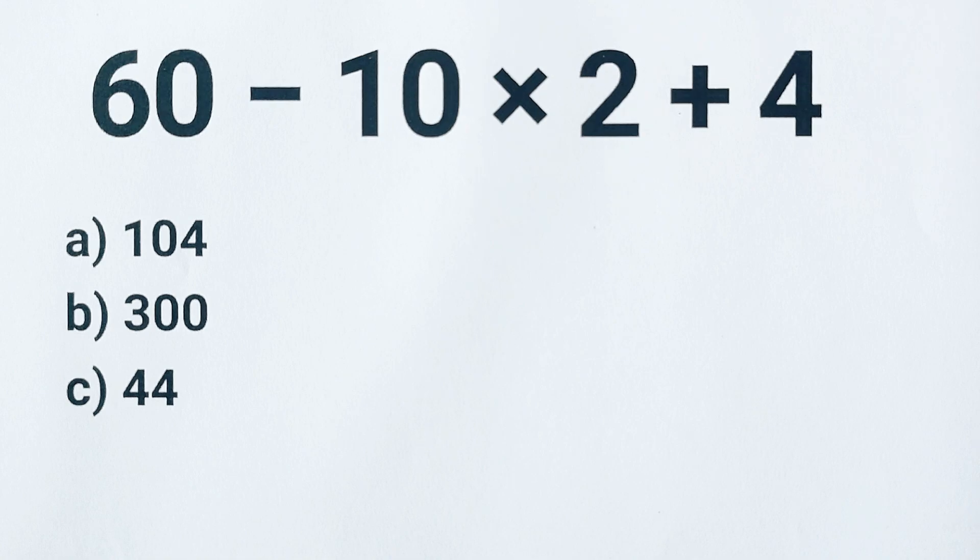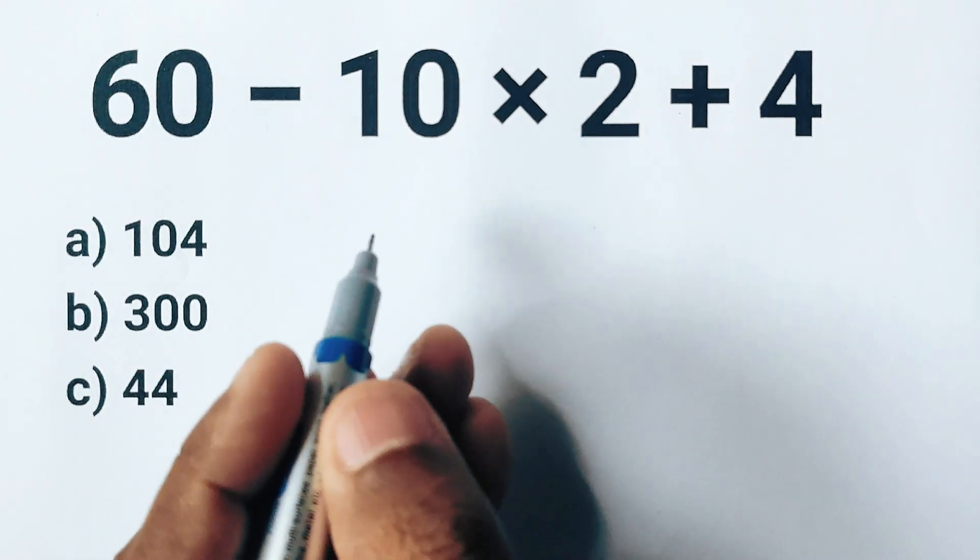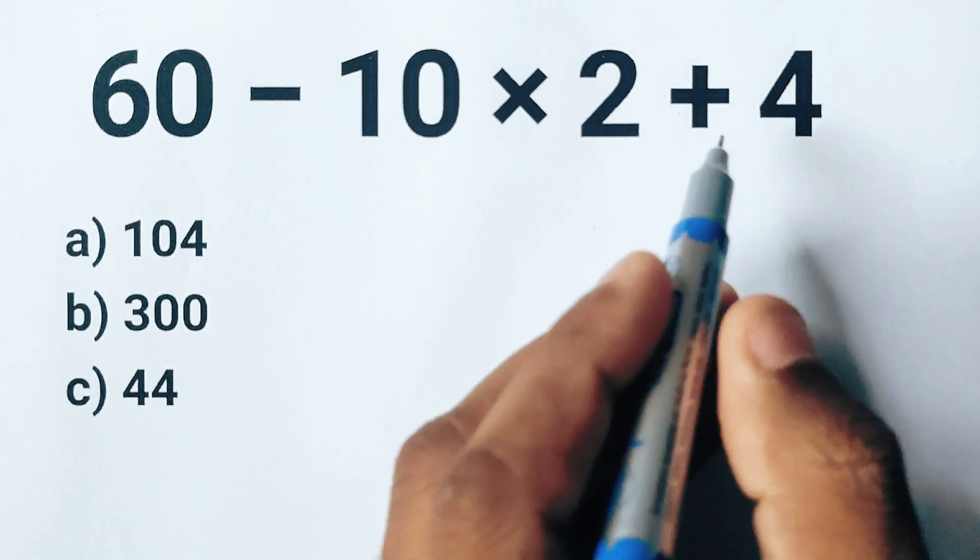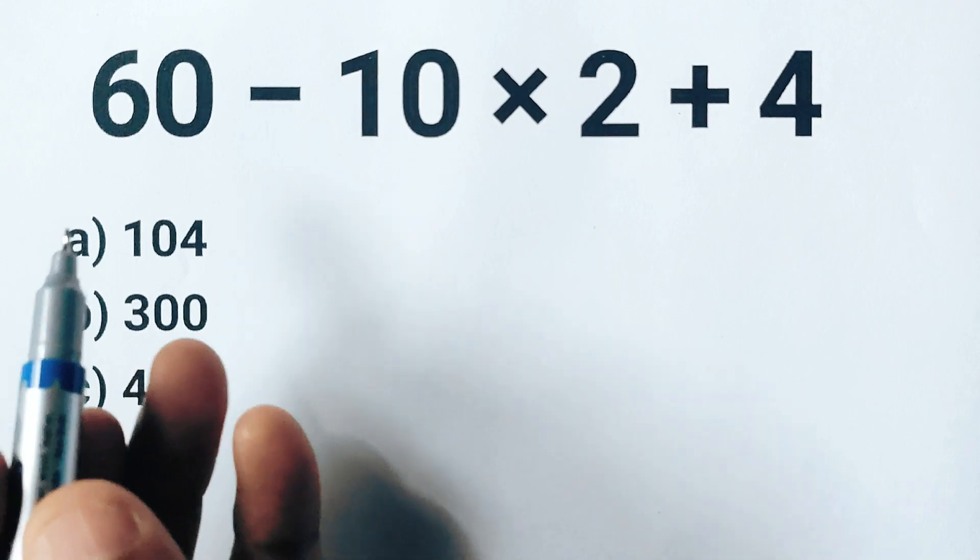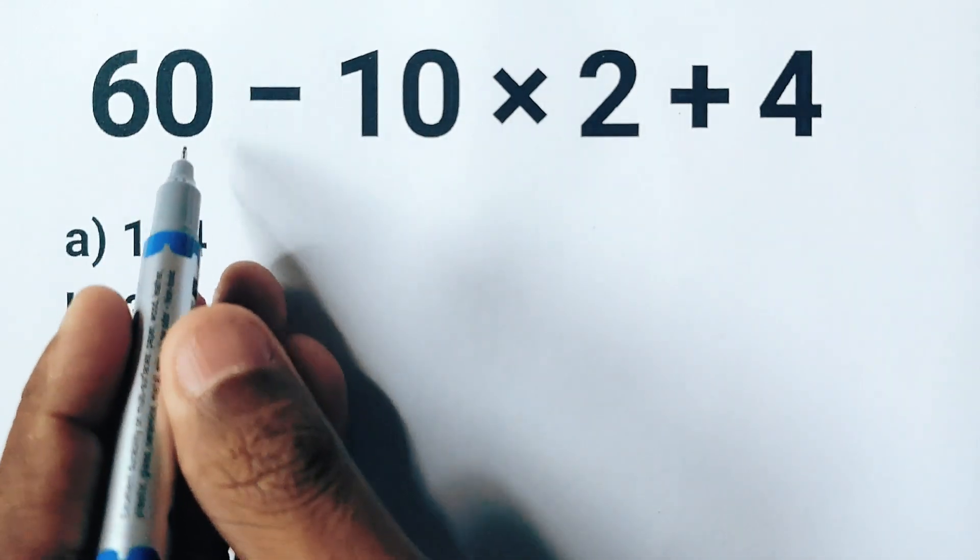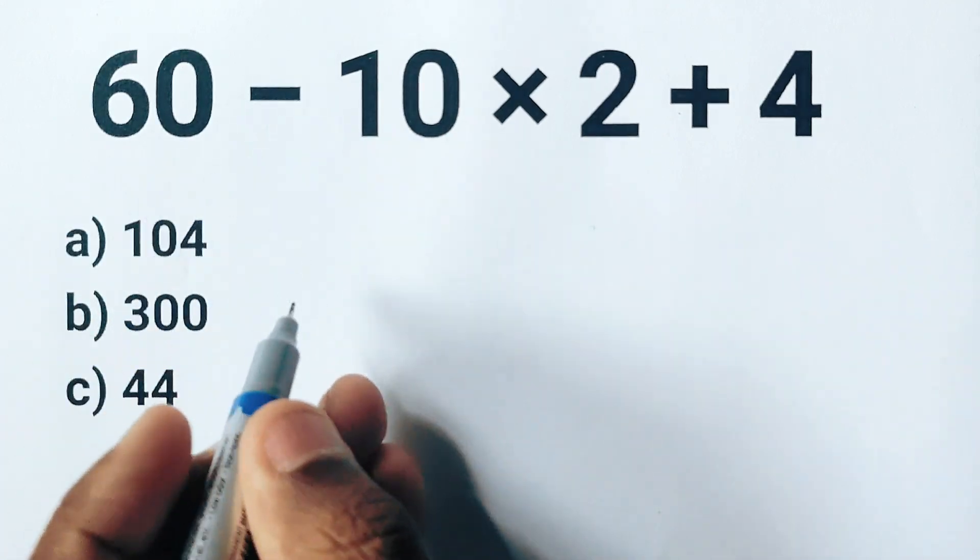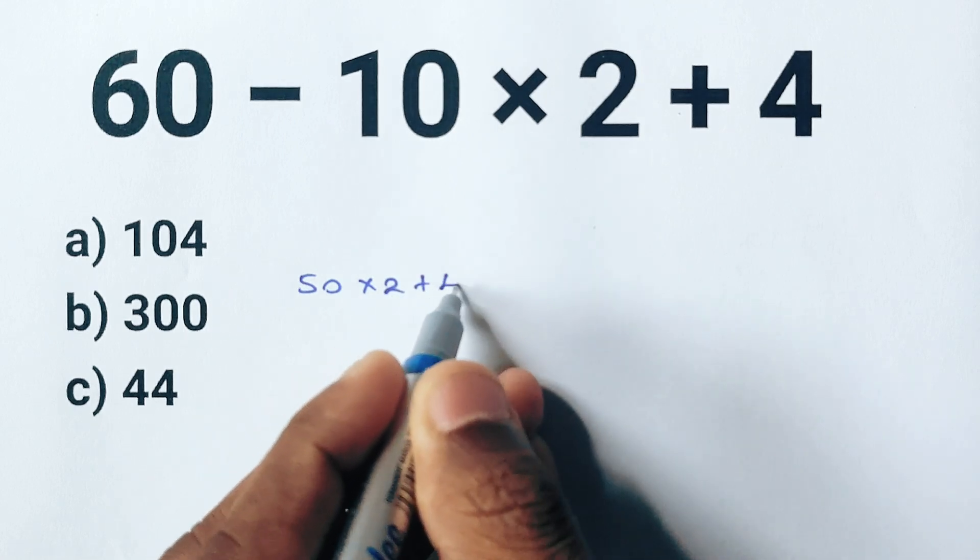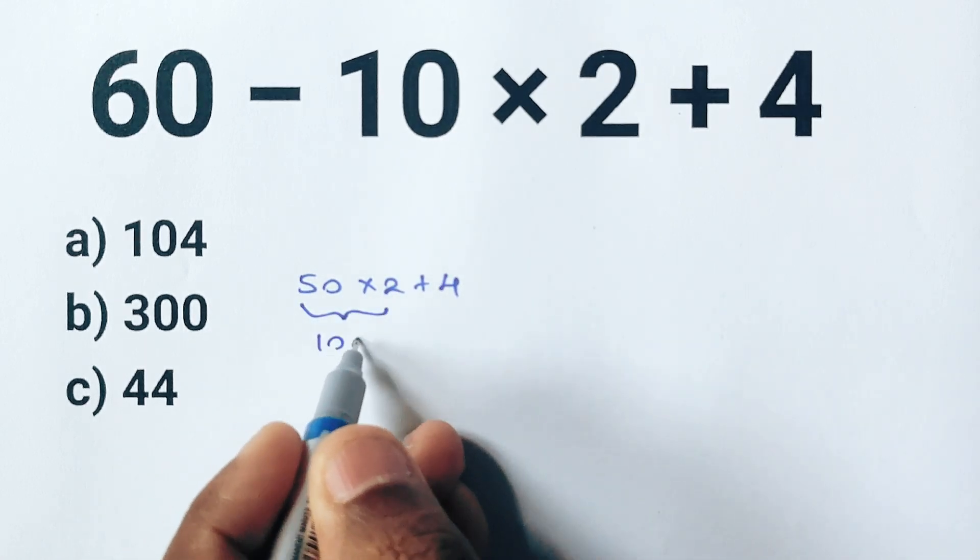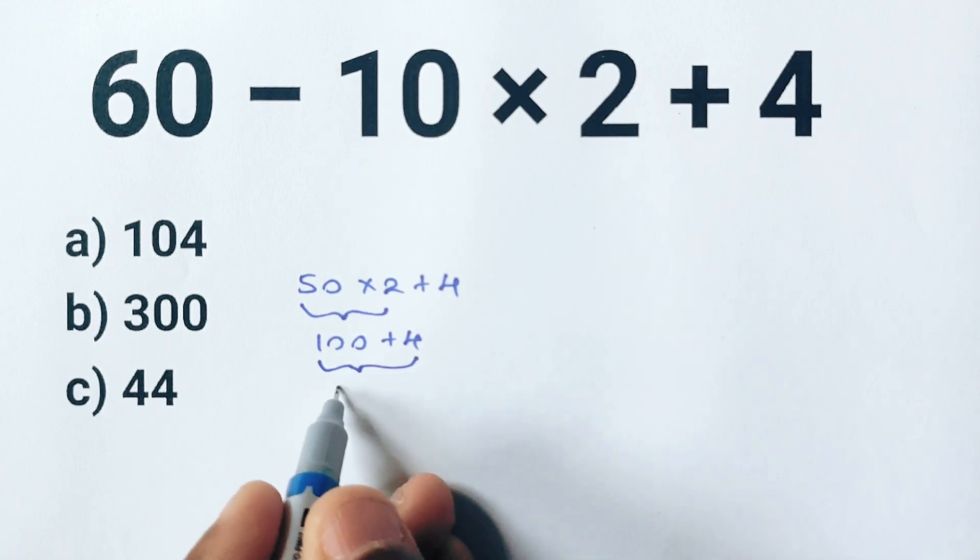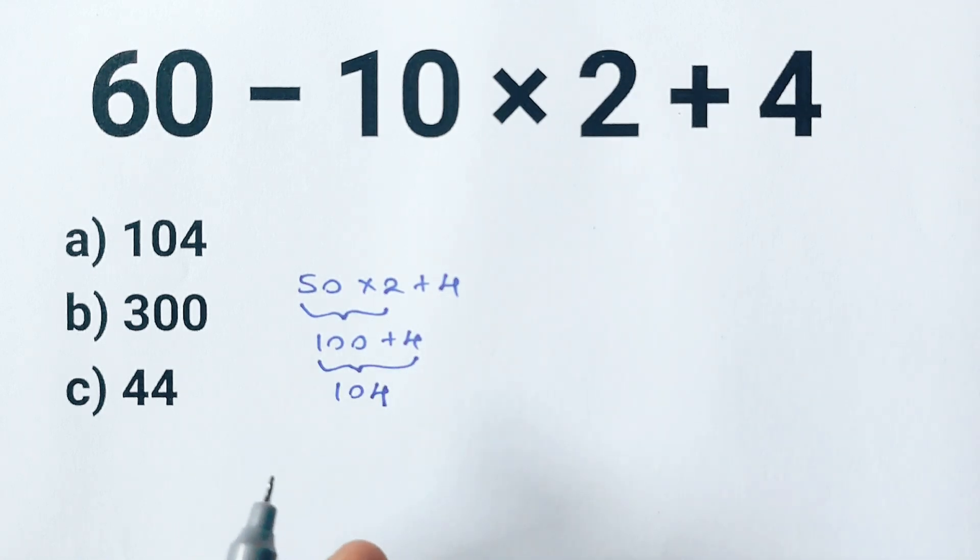All right, let's take a look at the expression again: 60 minus 10 times 2 plus 4. Now let's say someone decides to just go from left to right doing subtraction first, so they might say 60 minus 10 is 50. Then 50 times 2 is 100, and finally 100 plus 4 gives 104. So they would end up with an answer of 104.